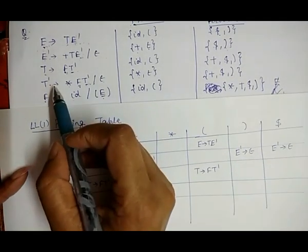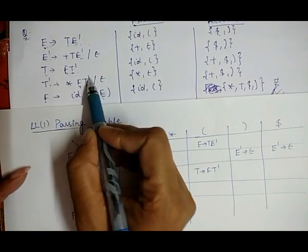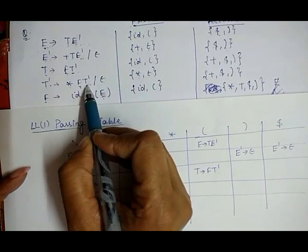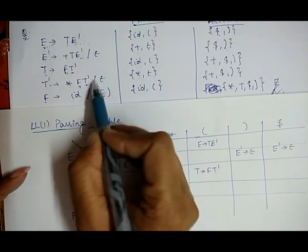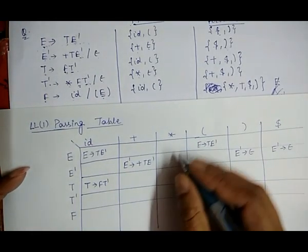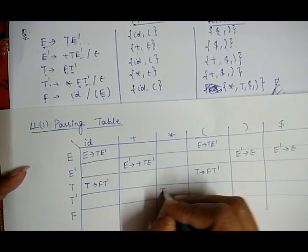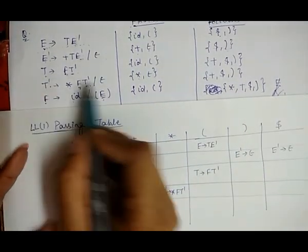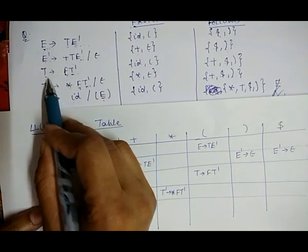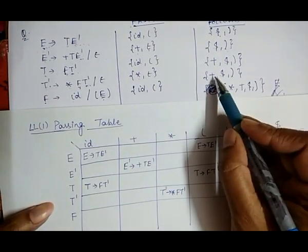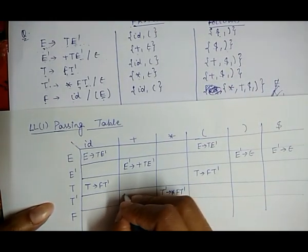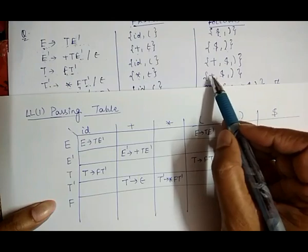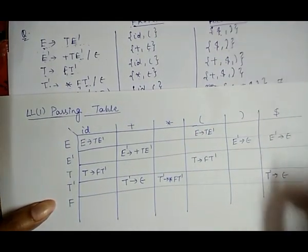Next, T' → *FT' | ε — two choices. For T' → *FT', FIRST of this is {star}, so under the column of star we place T' → *FT'. For T' → ε, we take FOLLOW of T', which is {plus, dollar, close brace}. So under the plus, dollar, and close brace columns we place T' → ε.